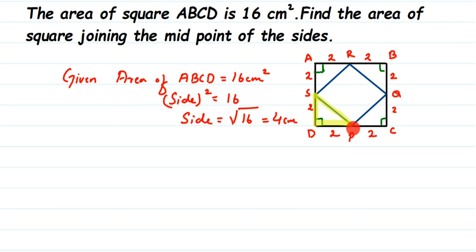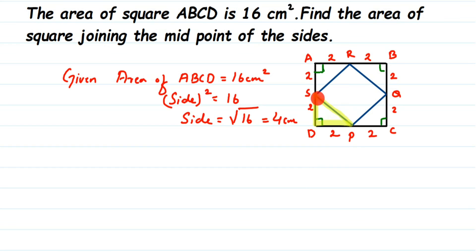SP is the hypotenuse because it is the side opposite to the 90 degree angle at D. Once we find the hypotenuse SP, we know it is the side of the inner square, and we can then find its area. So we are going to apply the Pythagoras theorem to find the hypotenuse SP.